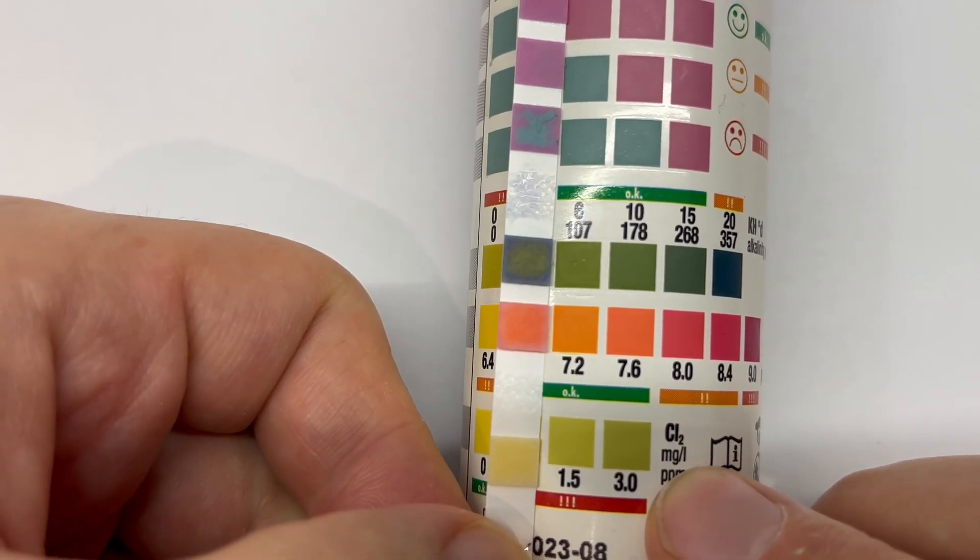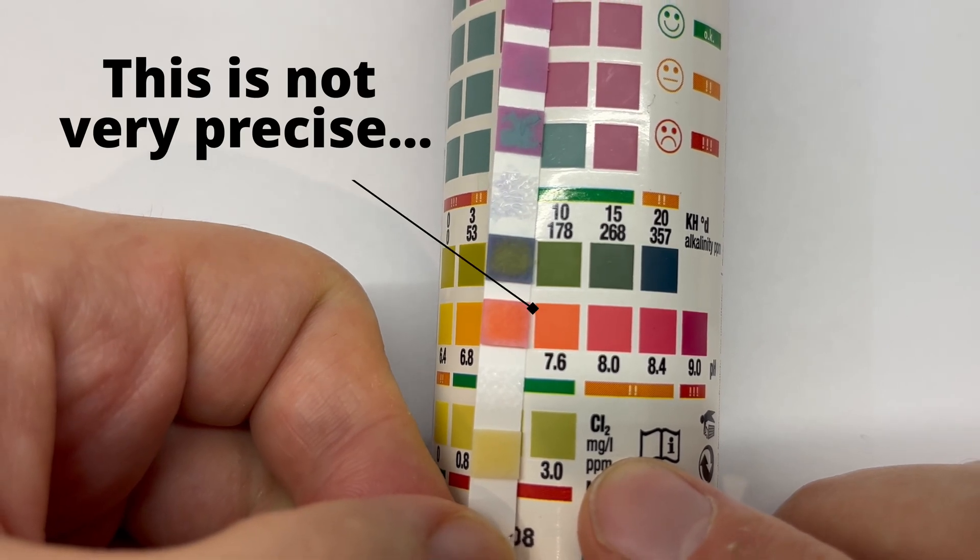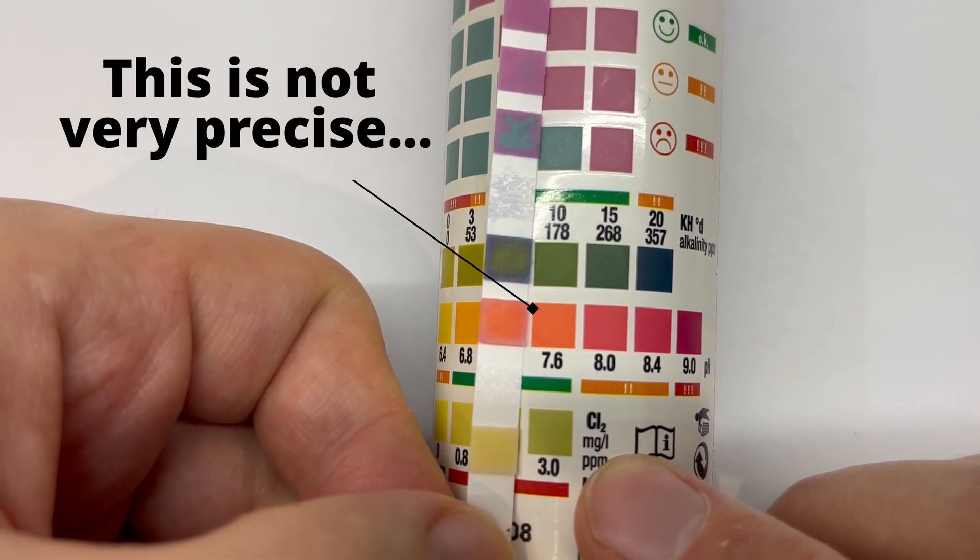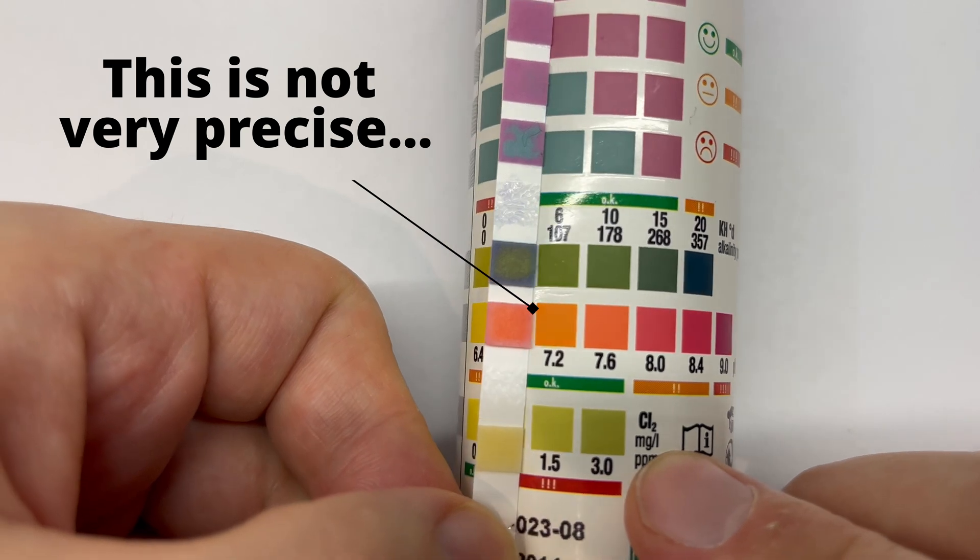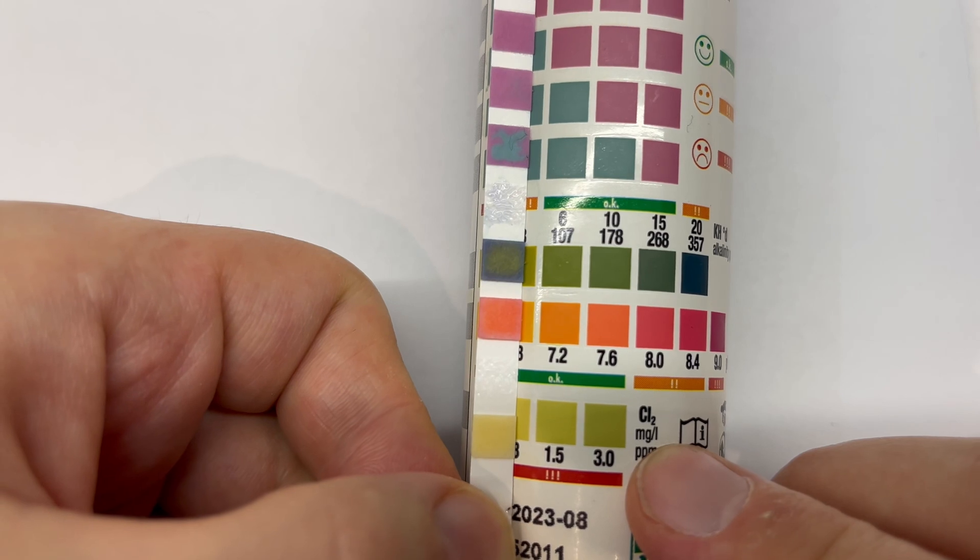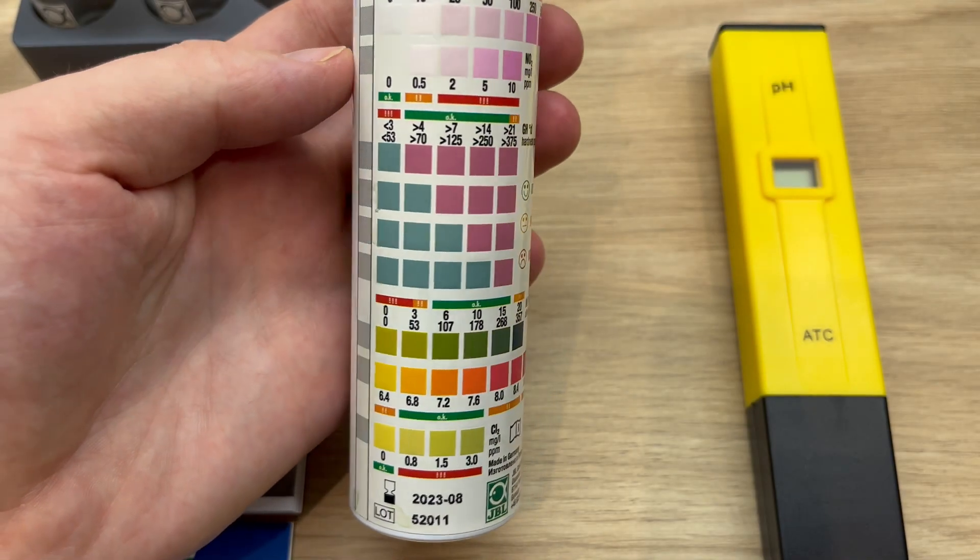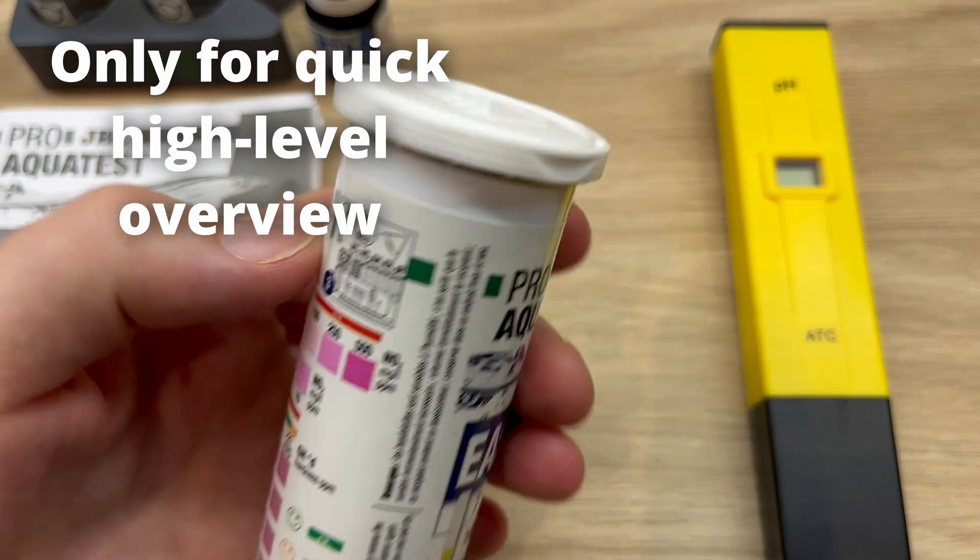But this method also has some problems. First of all, you can see that the jumps between numbers are quite high. So this is kind of a big range in between that you are not able to measure. It's not crazy precise. So if you want to be very precise with your numbers, you won't be able to do this with this test.